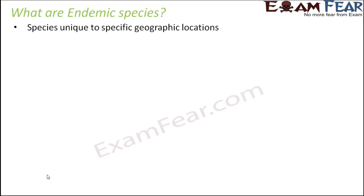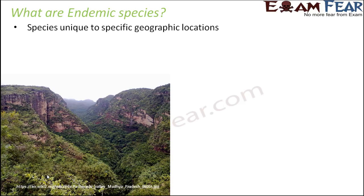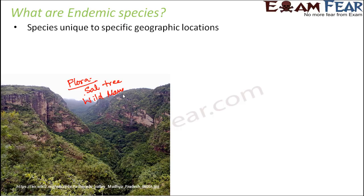That means you find the species only in certain specific locations — they are not common to multiple areas. Let us look at some examples. If we talk about the Panchmari National Park, in terms of the flora, you have the sal tree and the wild mango tree, and these are endemic species, very much unique to this specific location of Panchmari National Park.